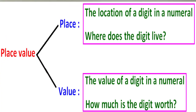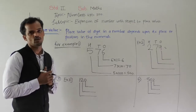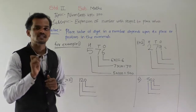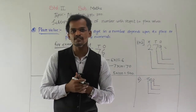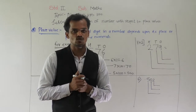Place value of a digit in a number depends upon its place or position in the numeral. So, place value depends on its place.